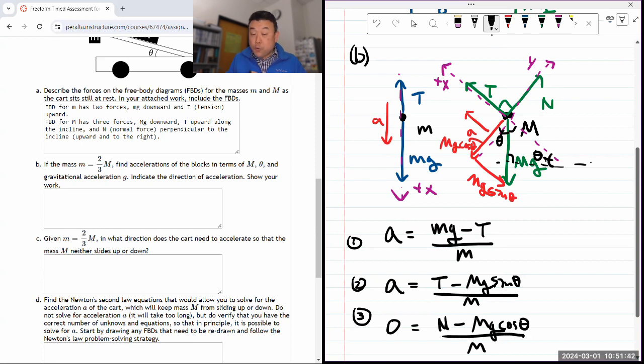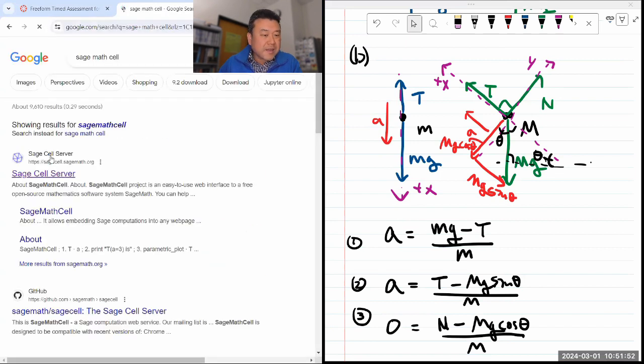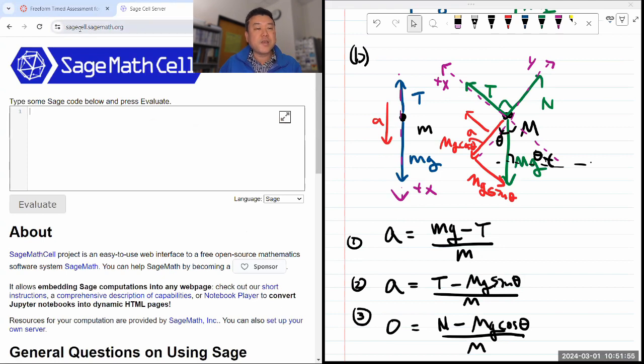So I have system of three equations. Now we can solve for it. Let's use SageMath. So I'll use SageMath cell here as we were using before. I'm just going to do Google search. I can never remember this website URL. SageCell.SageMath.org. So let me declare all my variables. That's going to be small m, big M, g, t, acceleration. Did I forget anything? Oh, theta.